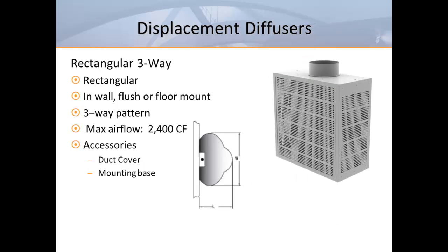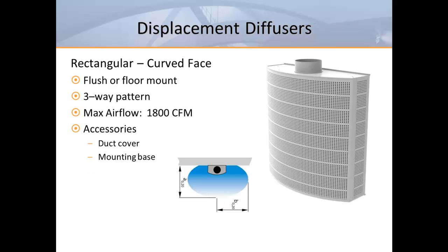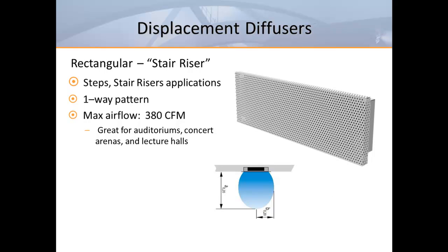The next unit is similar to the previous unit but includes discharge openings on the side to create a three-way air pattern. This next unit also provides a three-way air pattern but has a curved or bow-fronted face, which seems to be most acceptable to architects and interior designers. Another unit is designed to go into auditoriums and concert halls to deliver displacement ventilation from a stair riser. Small round swirl diffusers can also be used to deliver low-velocity air from below the seating.